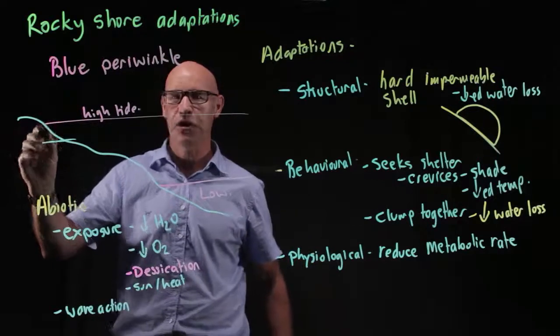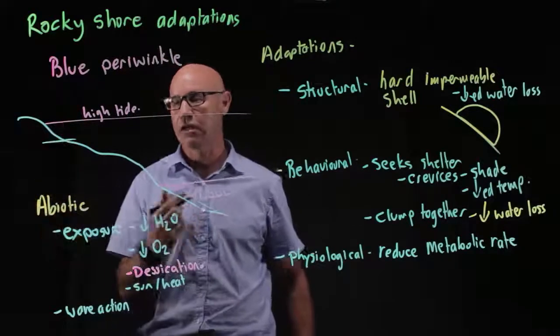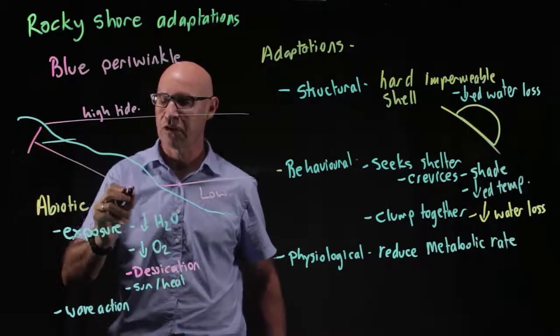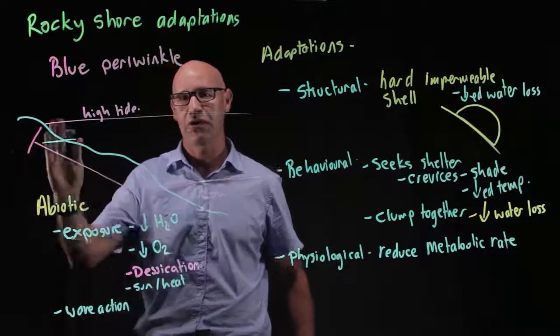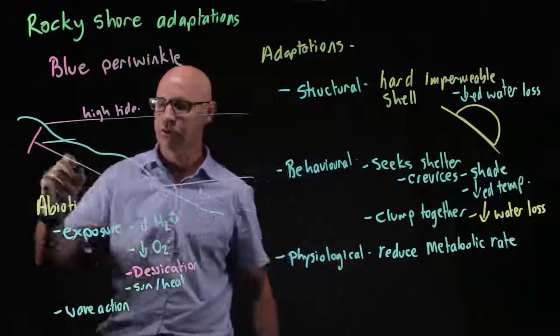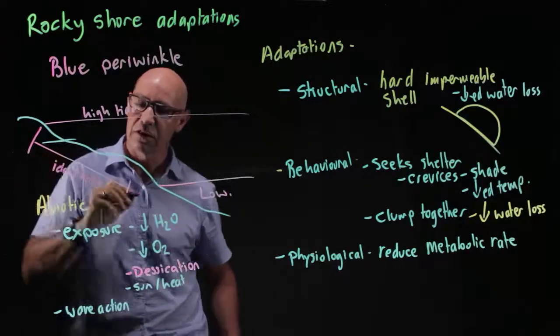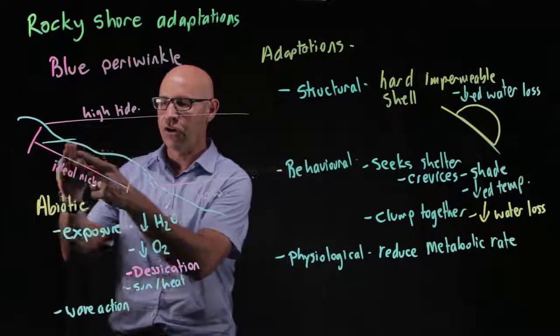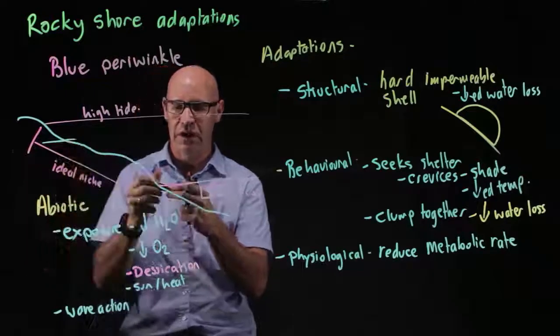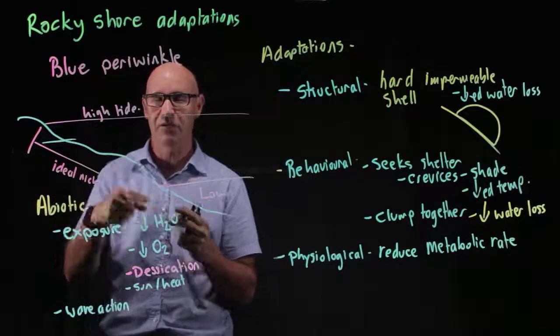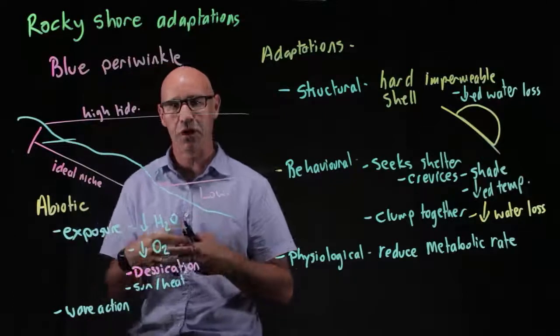We've got preferred niche and realized niche. It would certainly be able to tolerate living further down the rocky shore. So if we say this is their ideal niche, they've got the adaptations to tolerate living in all of this area. However, there's greater competition down here from other mollusks and other types of organisms as well.